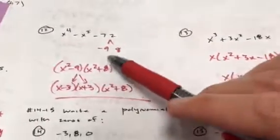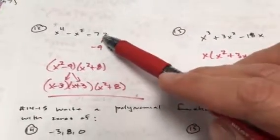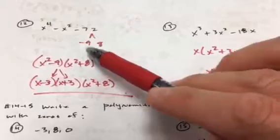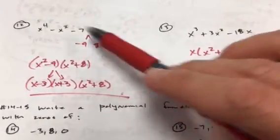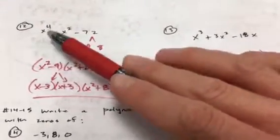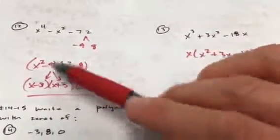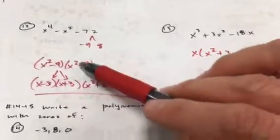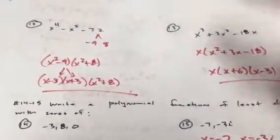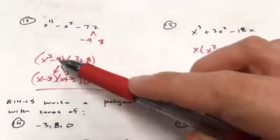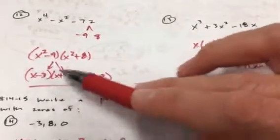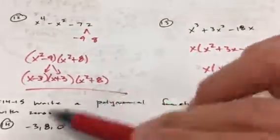Number 12 is normal factoring: multiply to negative 72, differs by one — use 9 and 8. The middle term is negative, so that's a negative x squared. Because you need x to the fourth, it has to be x² times x², giving x² minus 9 and x² plus 8. But x² minus 9 is the difference of two perfect squares, so we factor it further.